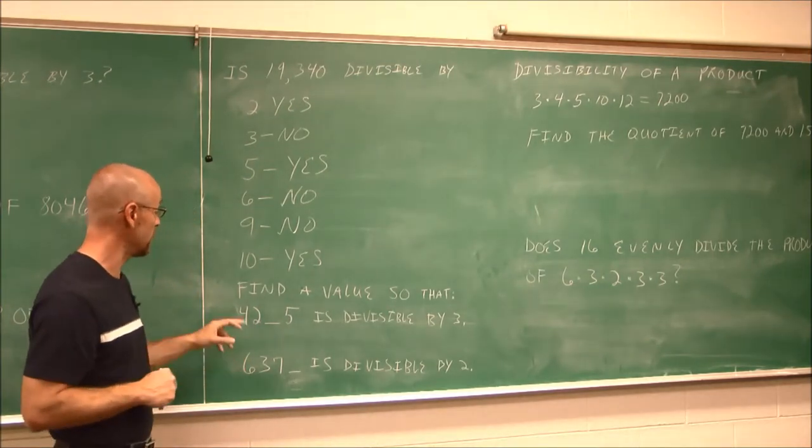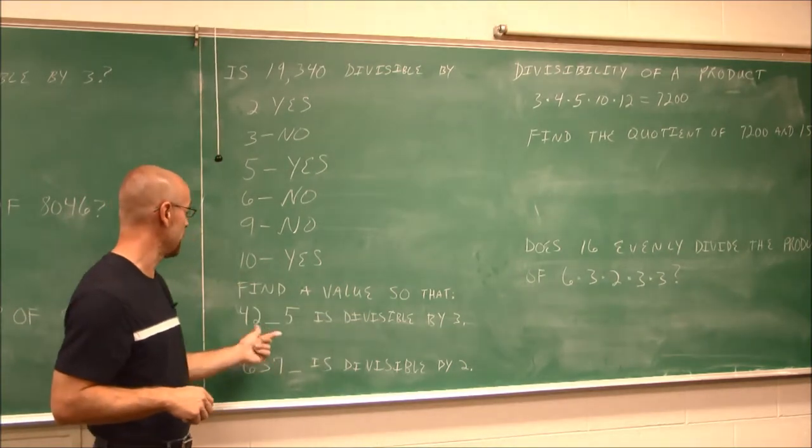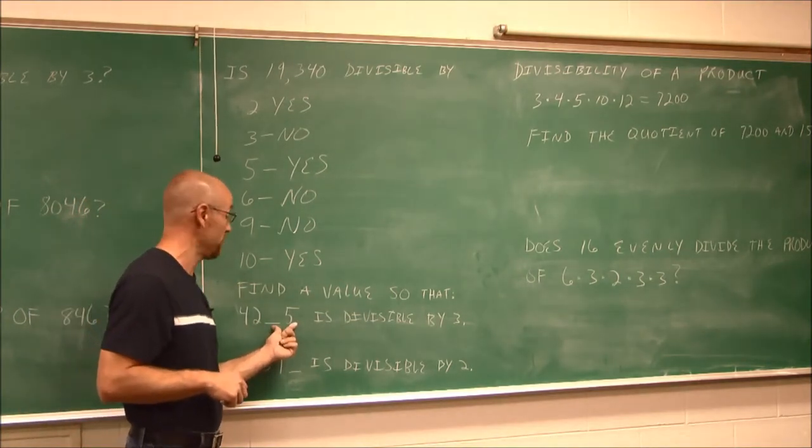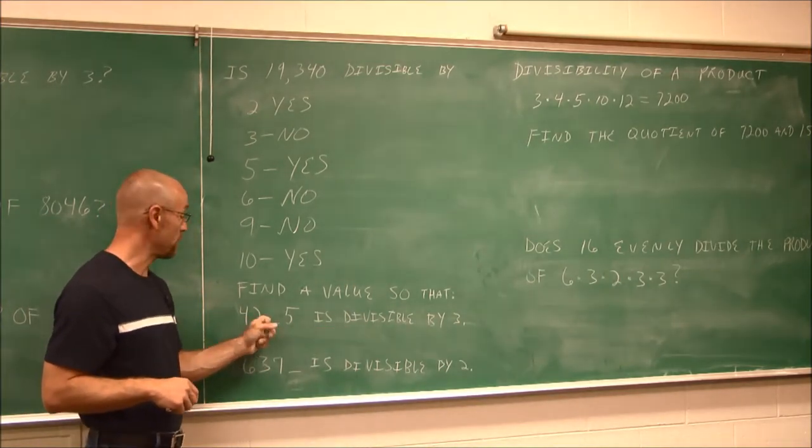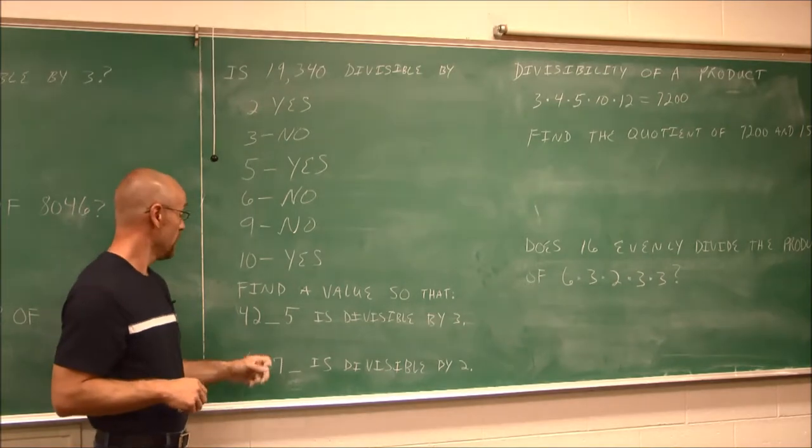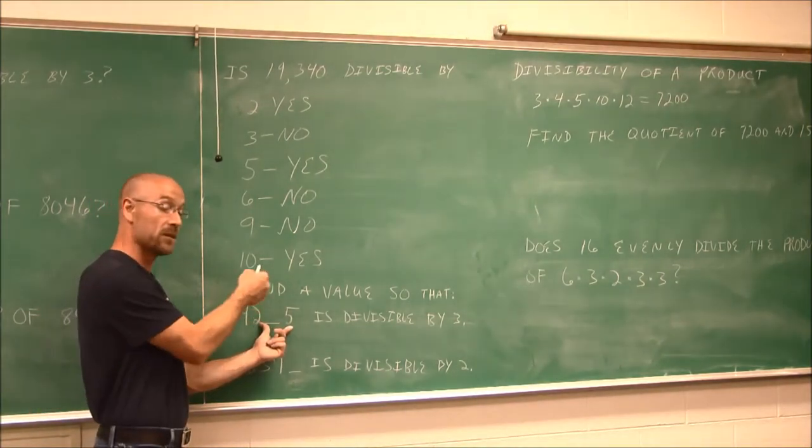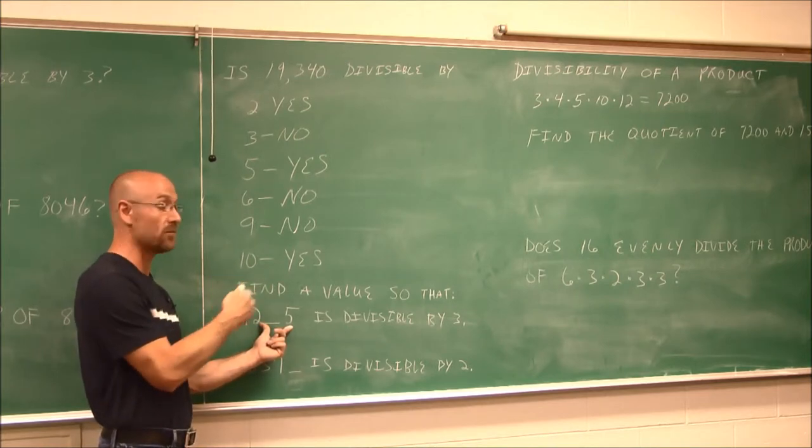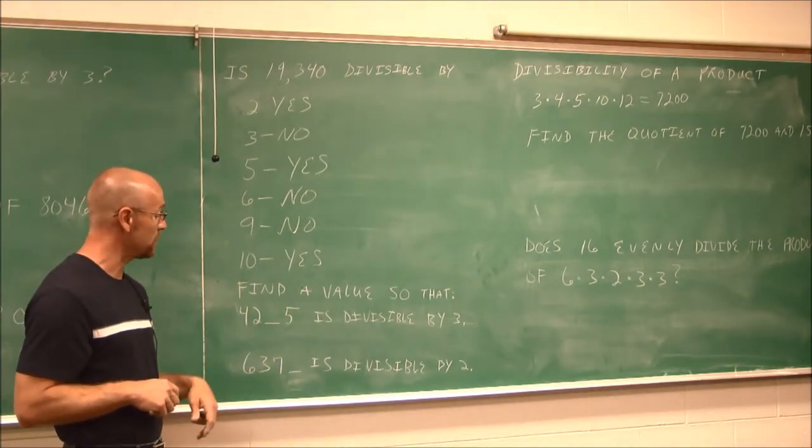This says find a value so that 4,200 and something 5 is divisible by 3. Find a value that would make this divisible by 3. Essentially, sum up these digits and find out another digit you would need in order for this to sum to some value that will be divisible by 3. I'm going to let you try this one on your own.